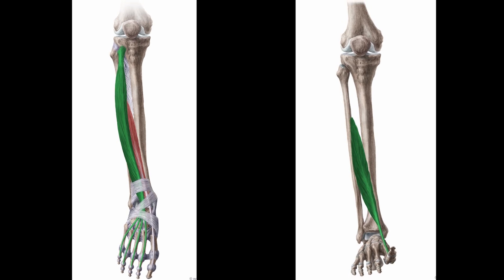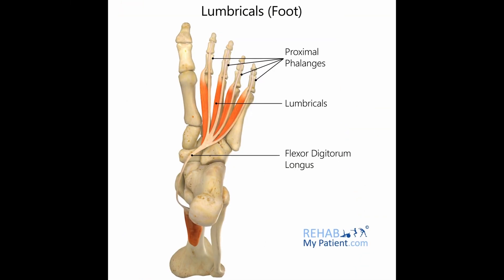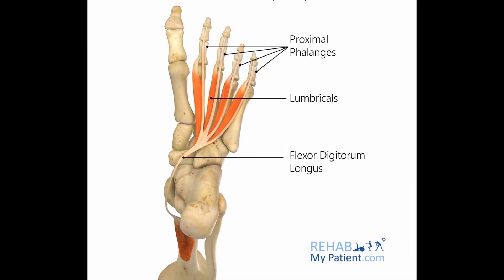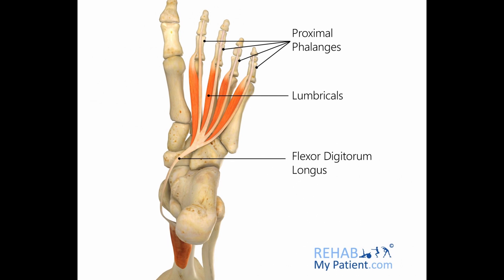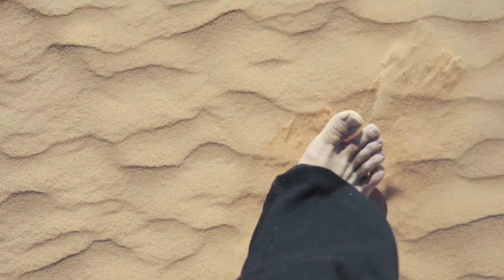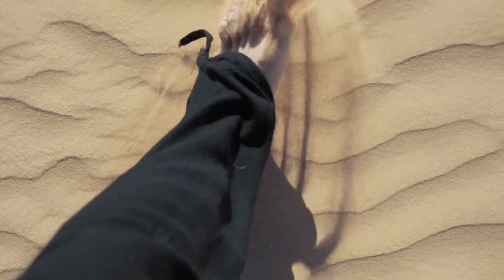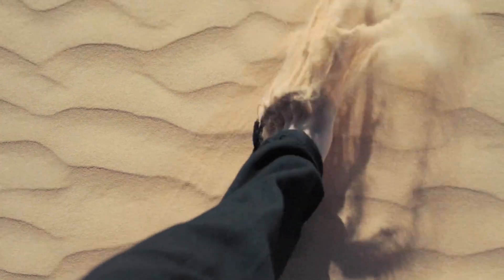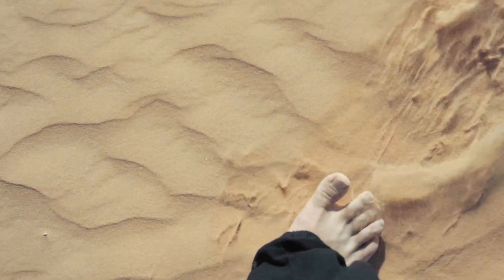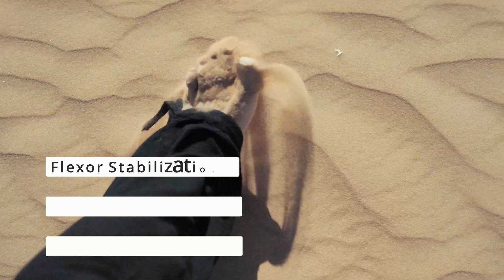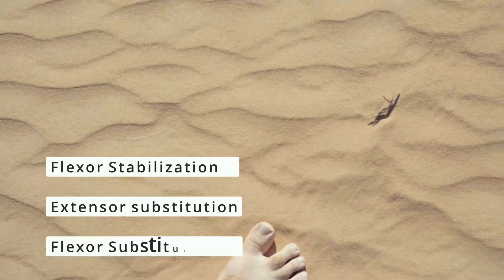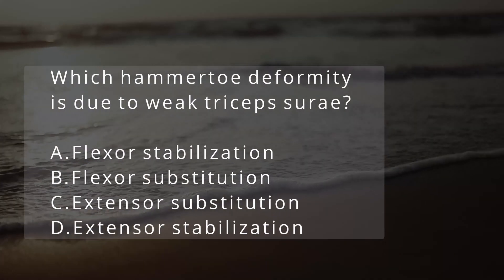This causes the extensor tendons to gain a mechanical advantage over the lumbricals. This overpowering by the extensor digitorum longus over the lumbricals causes the deformity. It is essential to be able to look at the three different types of hammer toe deformities and be able to recognize each origin. Let's look at some questions.